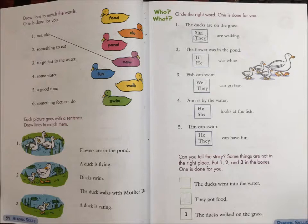Each picture goes with a sentence. Draw lines to match them. Flowers are in the pond. A duck is flying. Ducks swim. The duck walks with mother duck. A duck is eating.